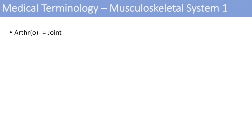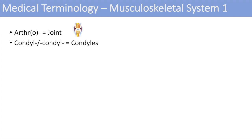The first one is arthro, which means joint. You can think of arthritis, an inflammation of the joint. The next one is condyle, which just denotes the condyles. The next one is chondro, which means cartilage — you can think of chondritis, an inflammation of the cartilage.